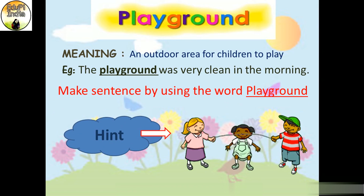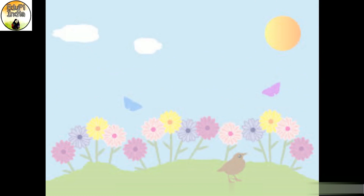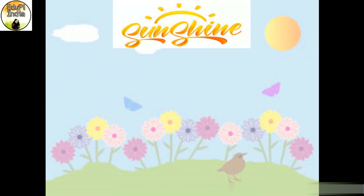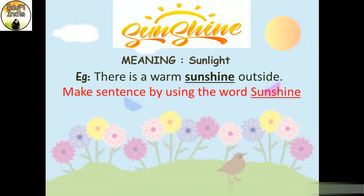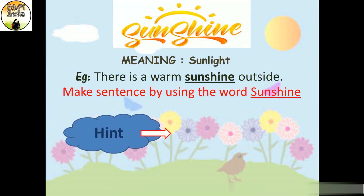The next word is 'sunshine.' Sunshine is a compound word made up of sun and shine, which means the shining of the sun — that is, the light of the sun. For example, there is a warm sunshine outside. Can you make a sentence using this word 'sunshine'?